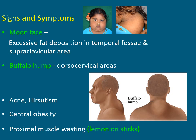Signs and symptoms of Cushing's syndrome: the main characteristic features are moon face and buffalo hump. Moon face is excessive fat deposition in the temporal fossa and supraclavicular area — see the first picture, this is the moon face and here is the supraclavicular area. Buffalo hump is seen in the dorsal cervical area — see the second picture, this is the buffalo hump.